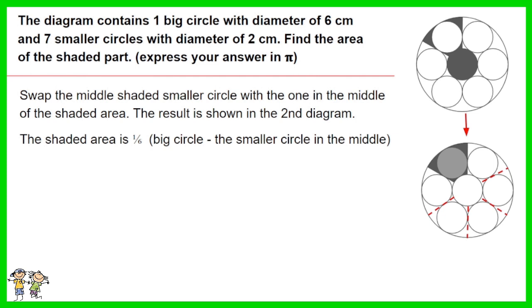From the second diagram, you can see that the shaded area is 1 sixth of the result of the big circle minus the smaller circle in the middle.